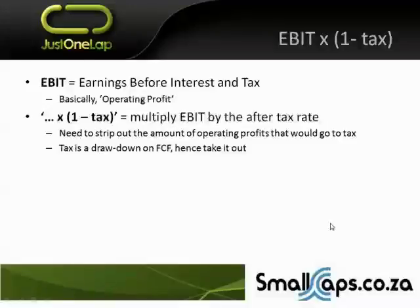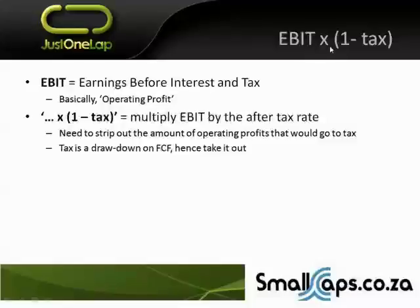The first component is EBIT times (1 minus the tax rate). What is EBIT? EBIT without the DA is simply earnings before interest and tax — basically operating profit. The reason we multiply EBIT by one less the tax rate is to strip out the tax the company would pay, getting to EBIT post-tax. Because tax is a drawdown on cash flows — it goes to SARS, to the government, not to the company. So you need to strip out the tax amount from the operating profits.